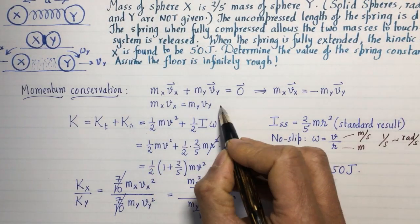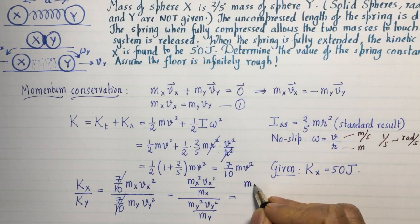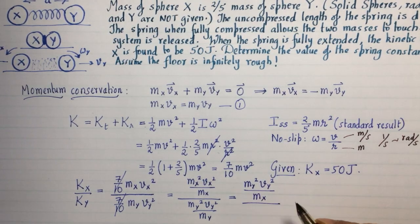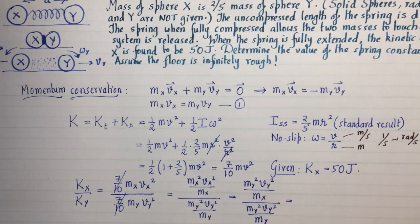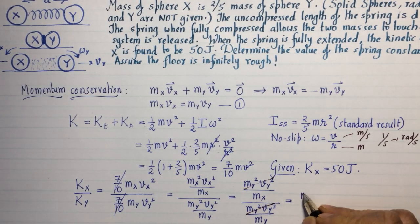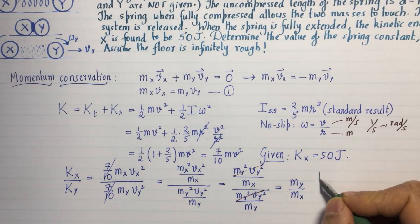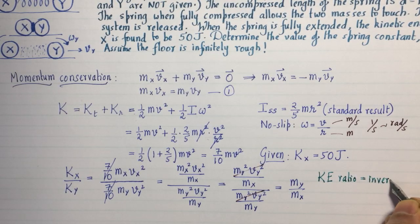By equation 1, mx·vx is precisely my·vy. So I'll replace mx·vx with my·vy, and when I square it, the numerator exactly cancels the denominator. Then I get the inverse ratio my/mx. This tells us something extremely useful: the kinetic energy ratio is the same as the inverse mass ratio.